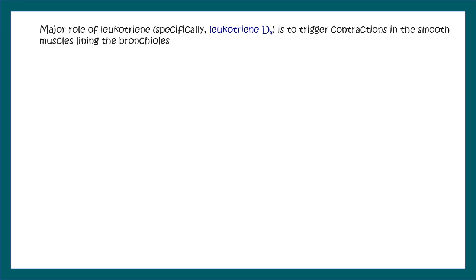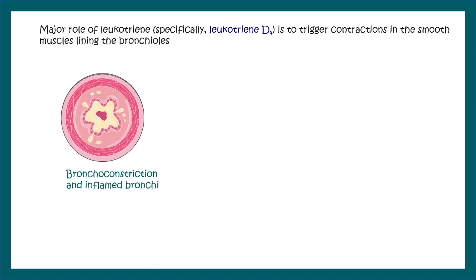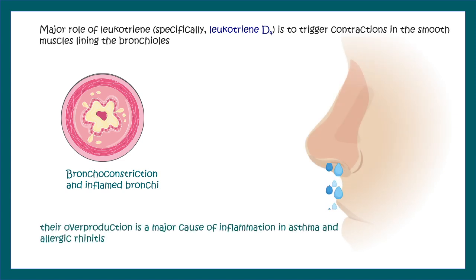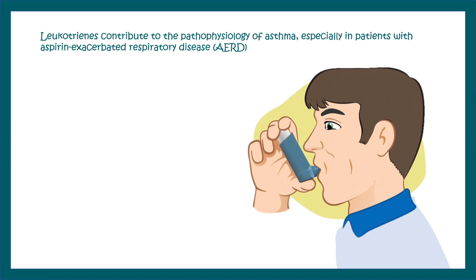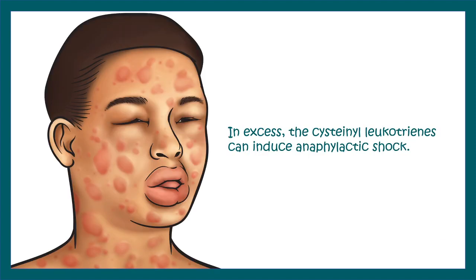A major role of leukotrienes, especially leukotriene D4, is to trigger contraction of bronchioles. This is the key underlying feature of rhinitis and asthma-like diseases. Leukotrienes contribute to the pathophysiology of asthma, and especially in the case of aspirin-exacerbated respiratory disease, whose symptoms include airflow obstruction, increased secretion of mucus, bronchoconstriction, and infiltration of inflammatory cells.